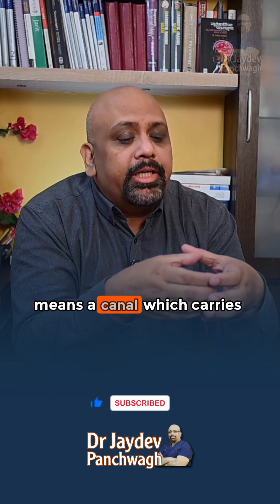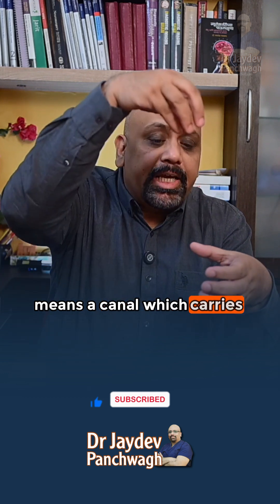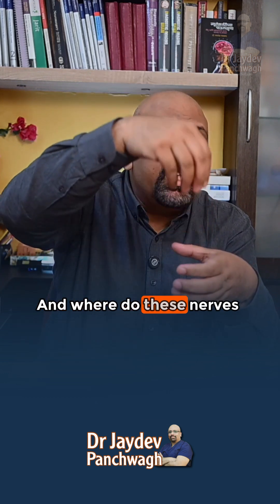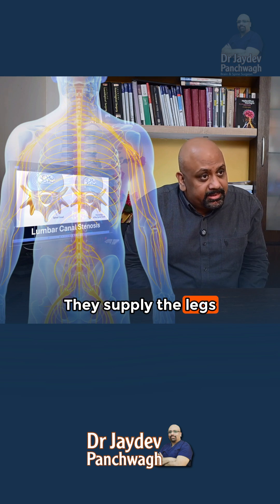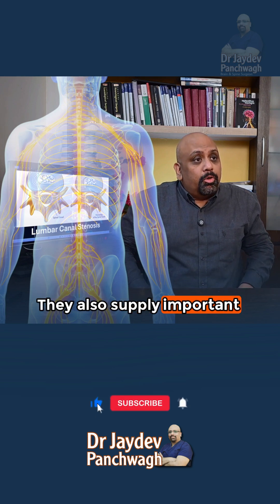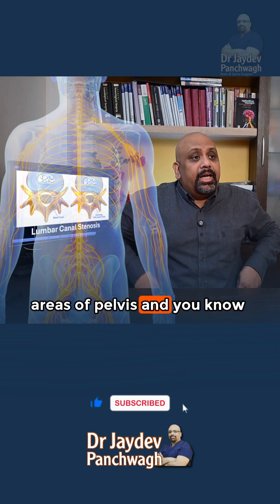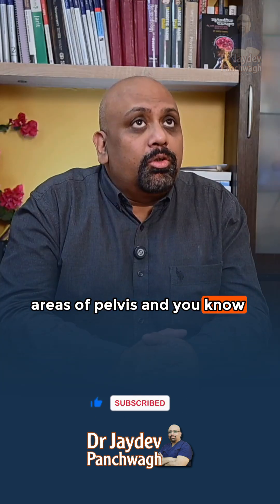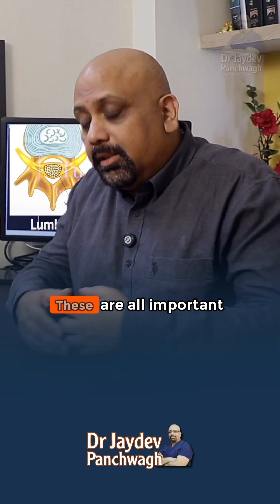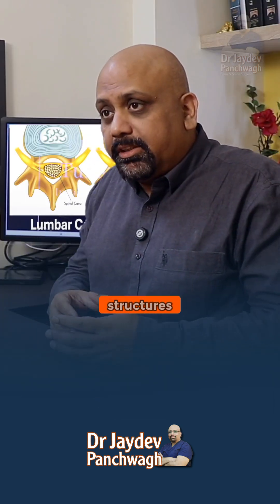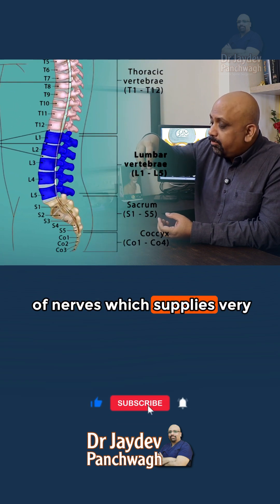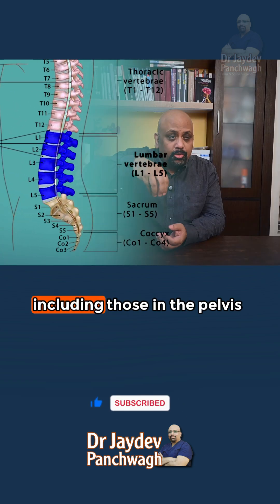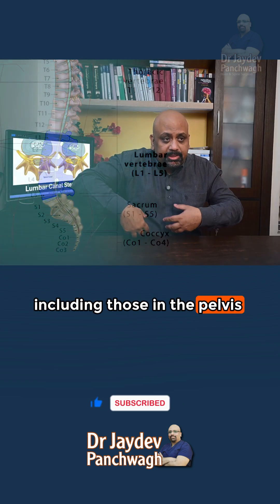Lumbar canal stenosis means a canal which carries nerves through it. Where do these nerves go? They supply the legs, and they also supply important areas of the pelvis, including the structures responsible for control of urination and defecation. So the lumbar canal carries a bundle of nerves supplying very important structures including those in the pelvis and the lower limbs.